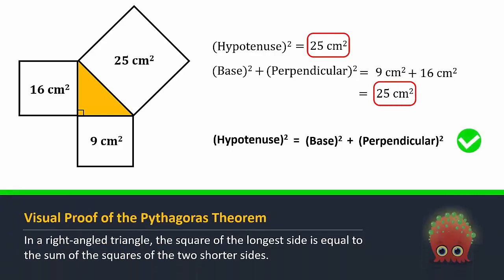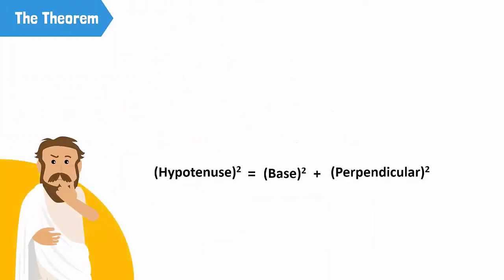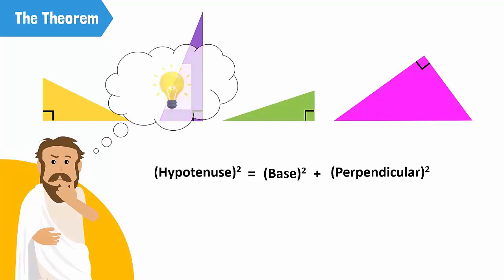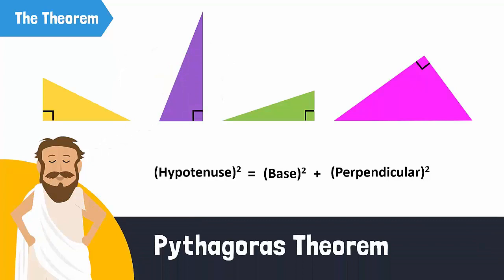And this is exactly equal to the square at the hypotenuse. Hence, this visually proves that the square of the hypotenuse is equal to the square of the base plus the square of the perpendicular. Pythagoras realized that this was always true, no matter the size of the right-angled triangle. Since this rule was discovered by Pythagoras, it is now known as the famous Pythagoras theorem.